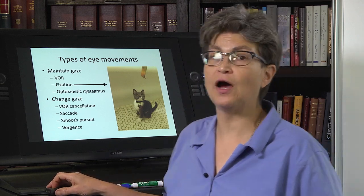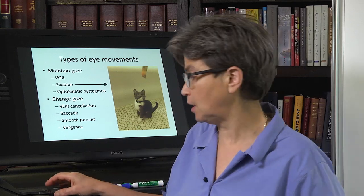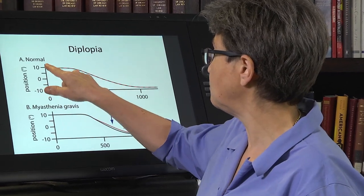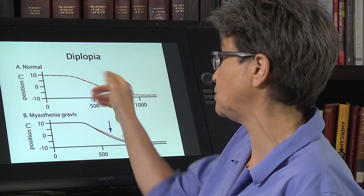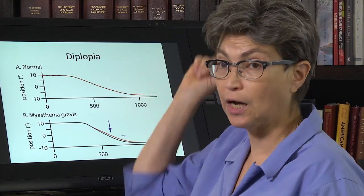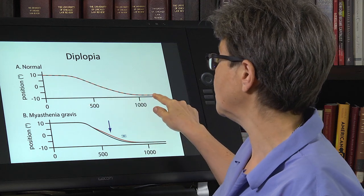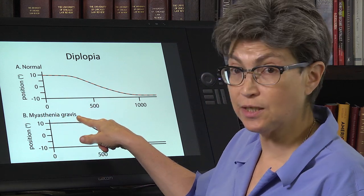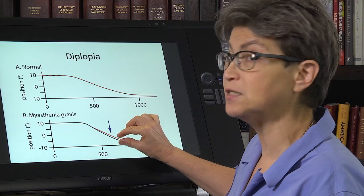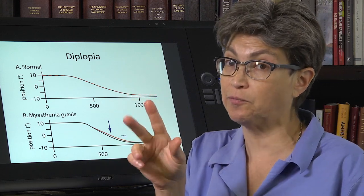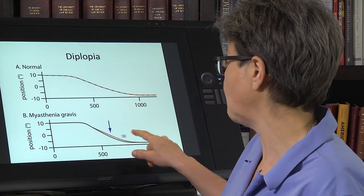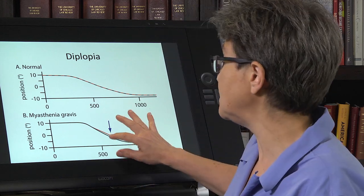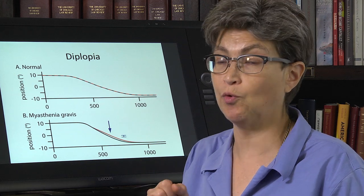What happens if eye movements are misaligned? What happens if the eyes are misaligned? The result is diplopia. A normal person shifting their eyes from 10 degrees on one side to 10 degrees on the other side moves their eyes together in conjugate, and all the way along they see one image. Here's a person with myasthenia gravis — as they move, the eyes become misaligned, looking at slightly different places. If you're off by even a degree, that will be noticeable and will result in double vision. That's what we want to avoid.